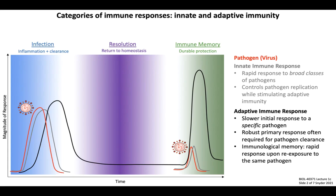Adaptive immunity therefore restricts pathogen growth and clears the infection, usually before any sort of clinical symptoms arise. These types of memory responses represent the basis of immune protection conferred by treatments such as vaccines, which we discussed in the previous lecture. In the next few slides, we'll introduce more detailed information about the specific cell types and functions involved in mediating innate and adaptive immune responses, keeping in mind how they differ with respect to timing, specificity for a given microorganism, and contributions towards protective immunological memory.